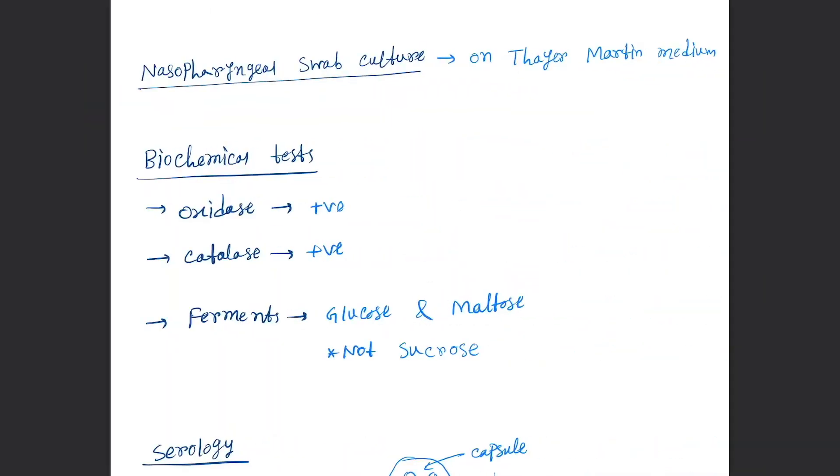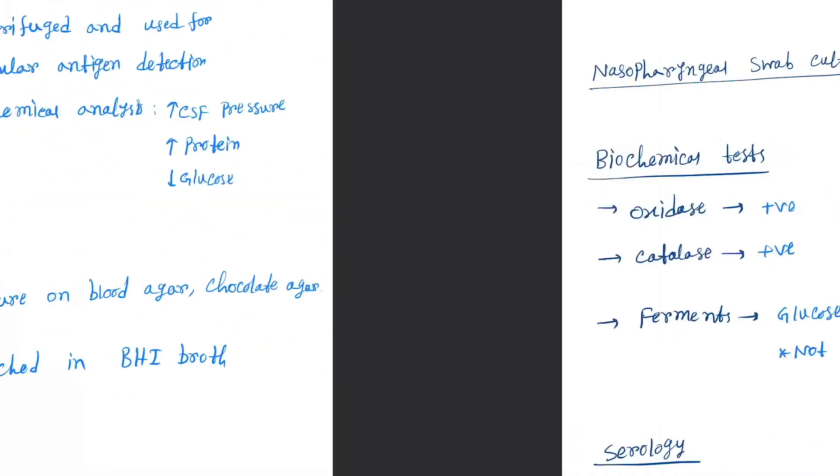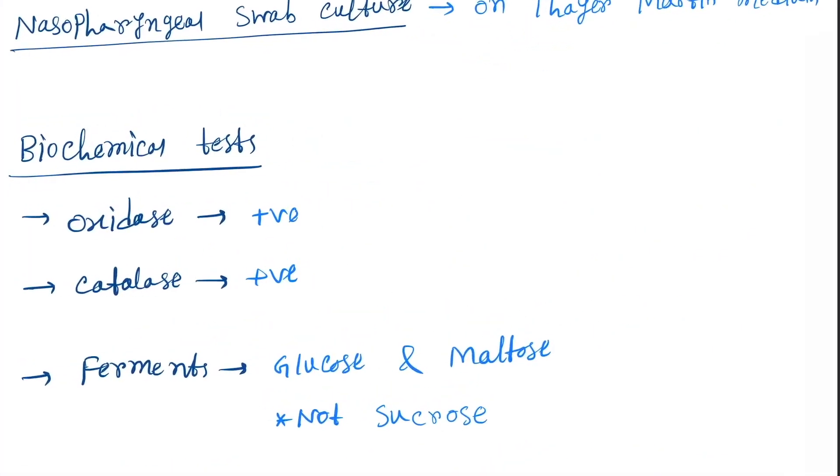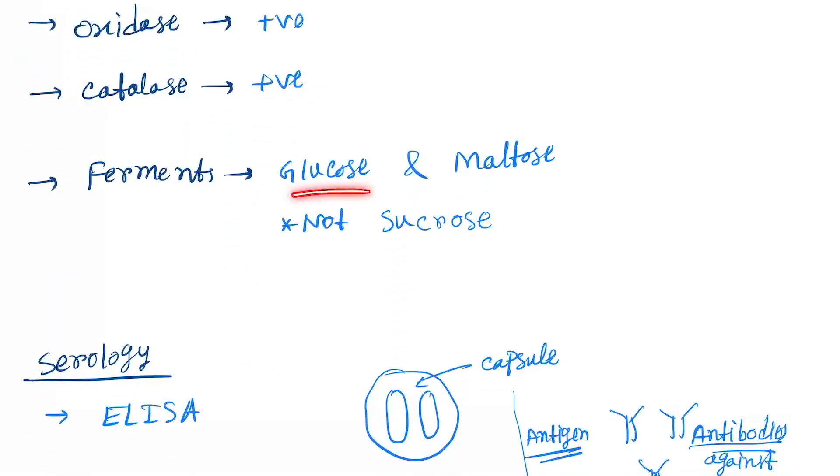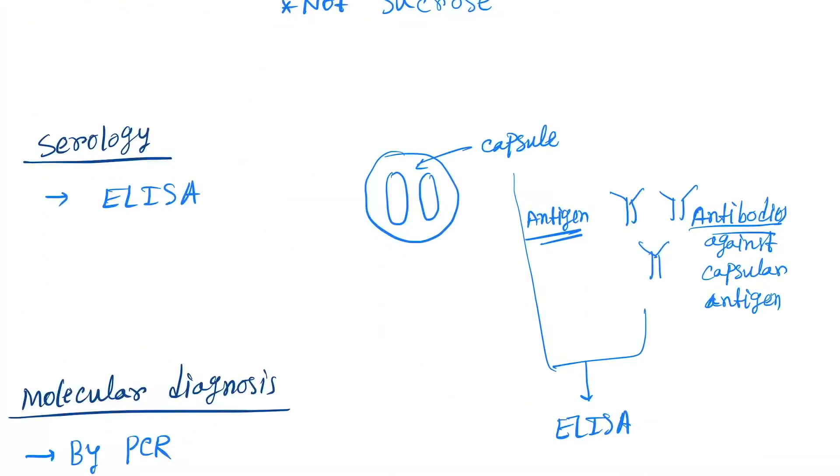Biochemical test: oxidase positive, catalase also positive. Ferments glucose and maltose but not sucrose. Remember: serological test, we do ELISA.